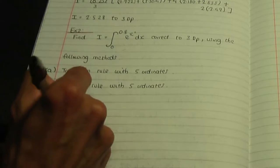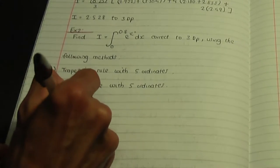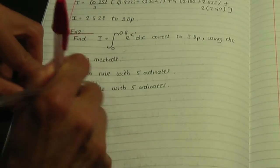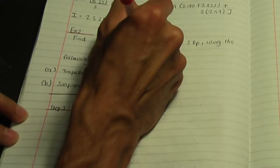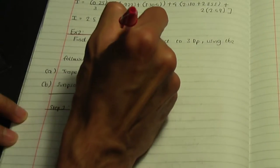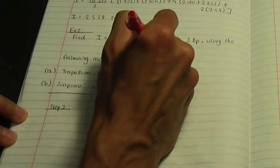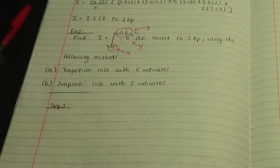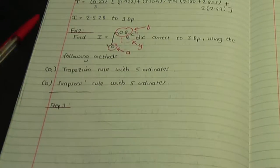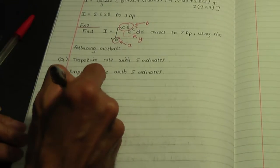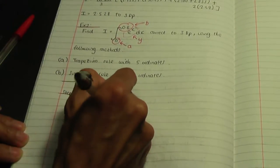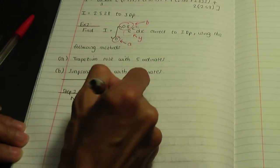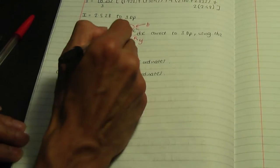Back to this example, step number one — let's gather the data. The lower limit here is the value of a, and the upper limit is the value of b. Within the integral, e to the power x squared is y, so y equals e to the power x squared, which we'll need later. So n equals 5, a is 0, and b is 0.8.